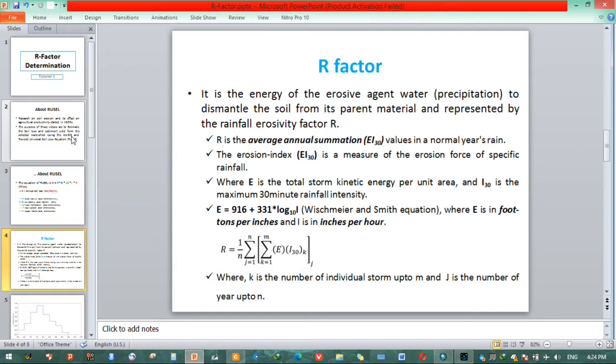R is the average annual summation of EI30 values in a normal year's rain, where EI30 is erosion index, which is a measure of the erosion force of a specific rainfall. From this EI30, there are two terms, E and I30, where E is total storm kinetic energy per unit area. And I30 is the maximum 30 minutes rainfall intensity.